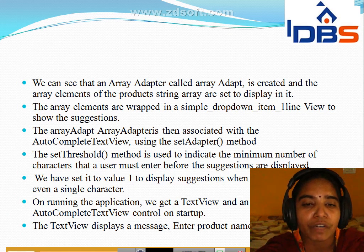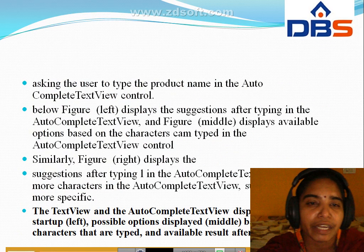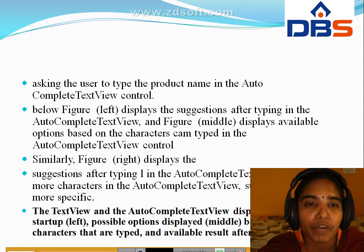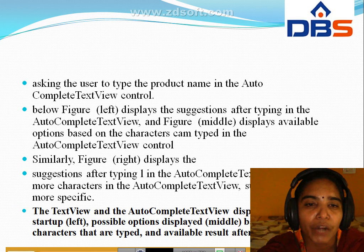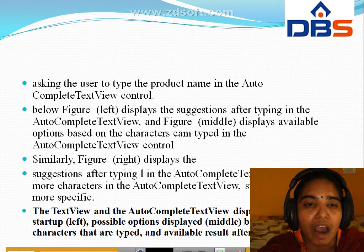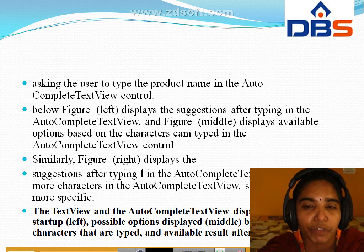The view displays the message 'enter a product name'. It asks the user to type in the auto complete text view control. In this figure, it displays the suggestions after typing in the auto complete text view. The middle figure displays the suggestions after typing one character in the auto complete text view. The suggestions become more specific as more characters are typed.